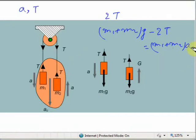From here we can get ac equals g minus 2T divided by m1 plus m2. Now we already have the value of T, so from this we can get the value of acceleration of center of mass.